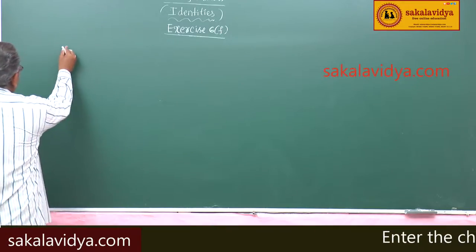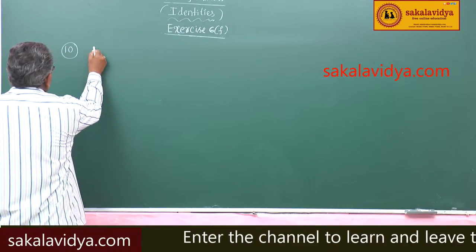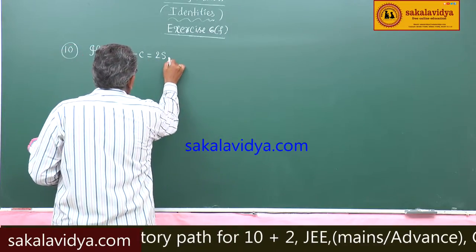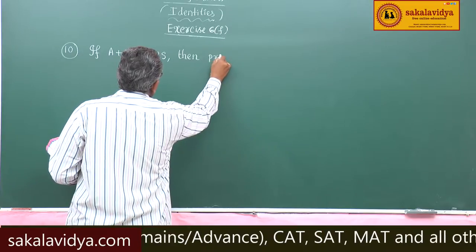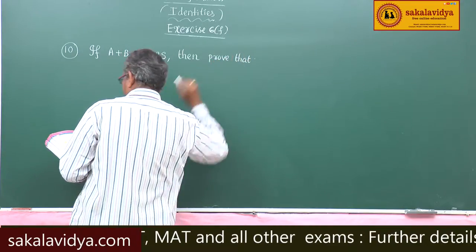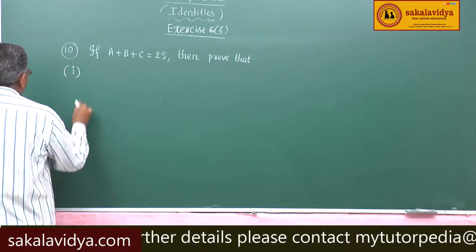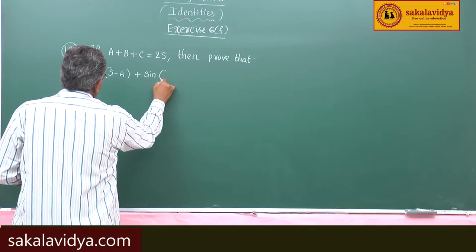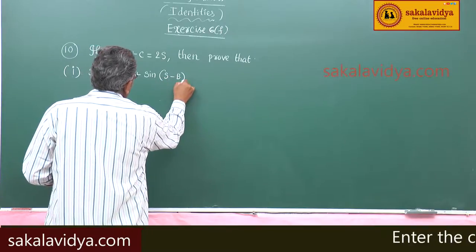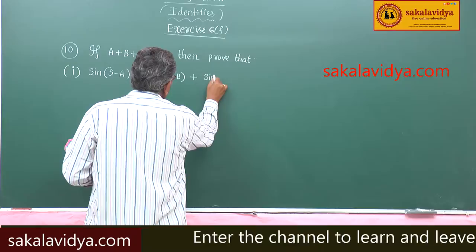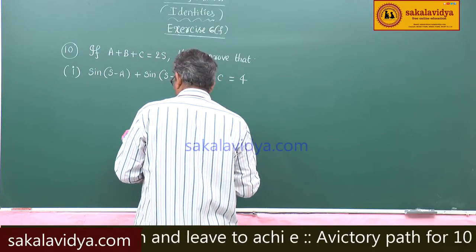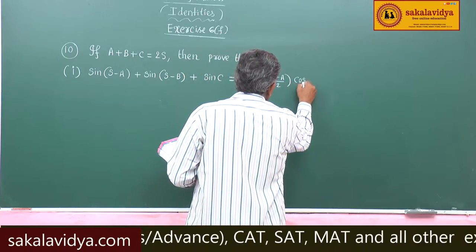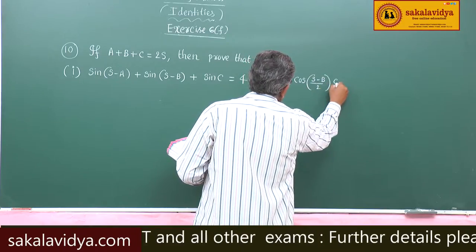10th problem. If a plus b plus c is equal to 2s, then prove the first one: sin(s minus a) plus sin(s minus b) plus sin(c) is equal to 4 cos((s minus a)/2) cos((s minus b)/2) cos(c/2).